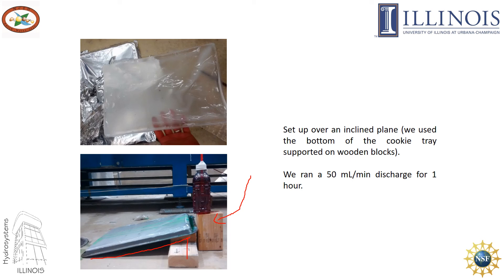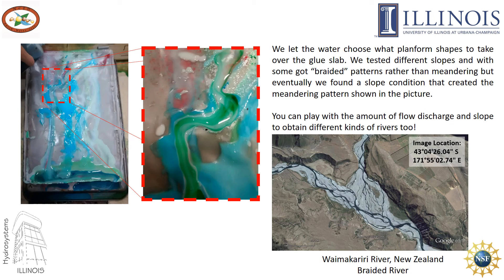We ran a 50 ml per minute discharge for one hour. In this case, we let the water choose what planform shapes to take over the glue slab — we just let the water flow without carving an initial channel. We tested different slopes, and with some slopes we got braided patterns rather than meandering. But eventually we found a slope condition that created a meandering pattern. We show an example of a braided river in New Zealand — not all rivers are meandering; some are braided and some tend to be straight. With these experiments you can play with the amount of flow discharge and slope to obtain different kinds of rivers.